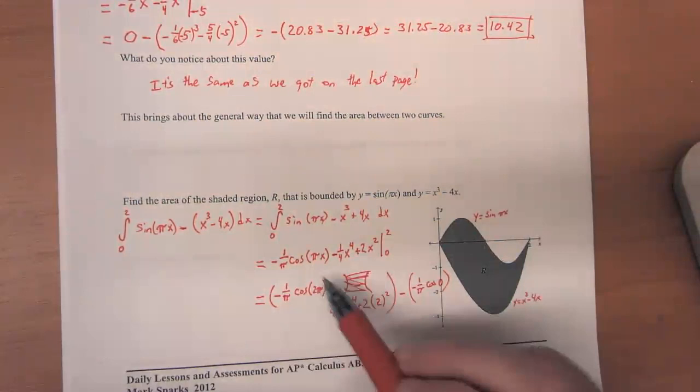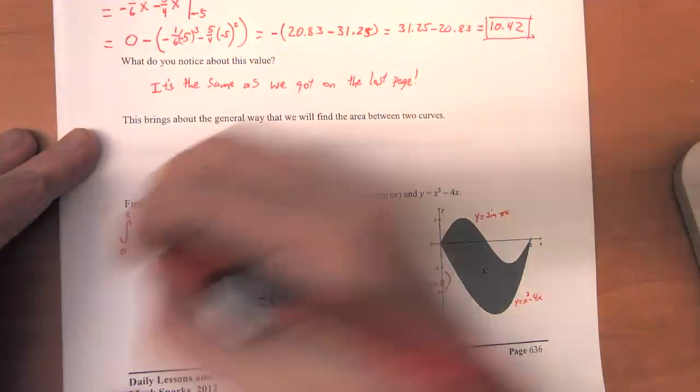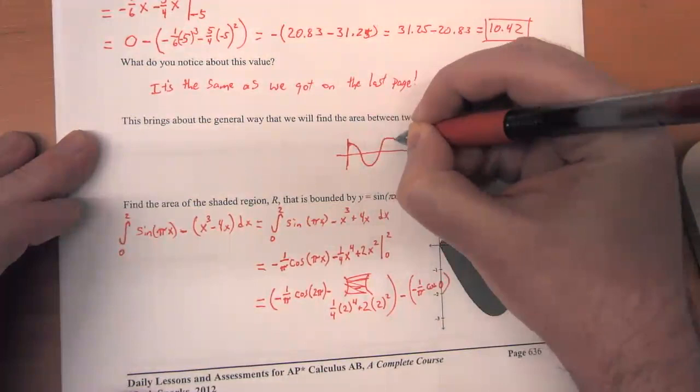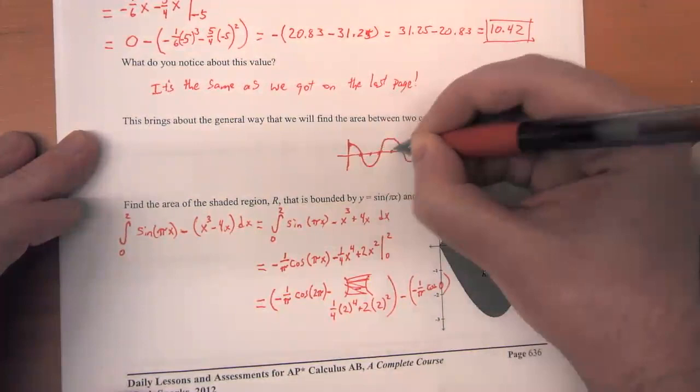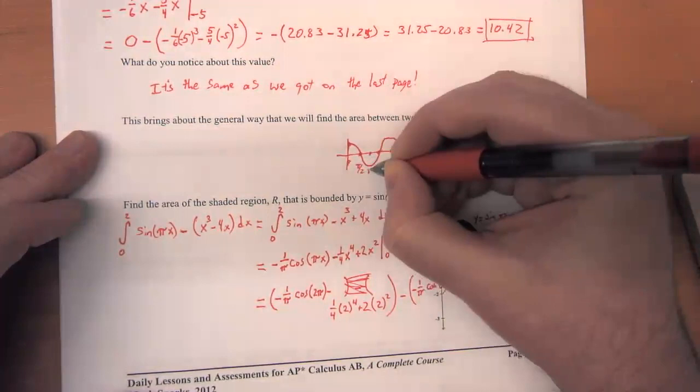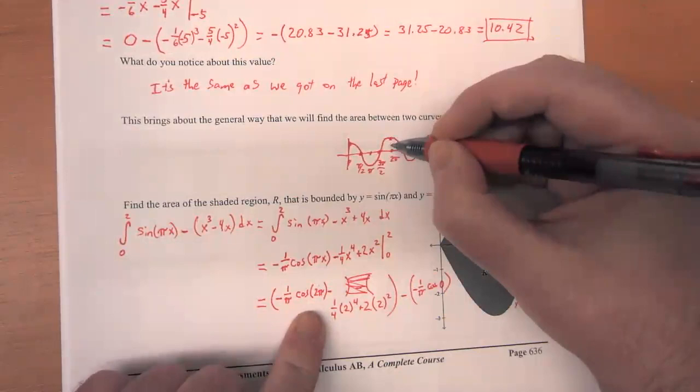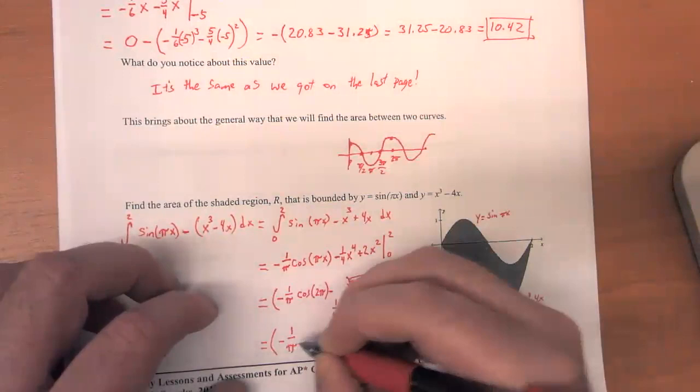So let's think about what these values are. And once again, I want to do this without using my calculator. So let's think about what the graph of cosine looks like. So cosine looks like this. So cosine of 2 pi is equal to 1. So this is equal to negative 1 over pi.